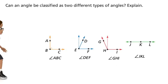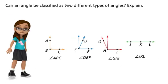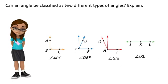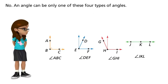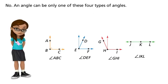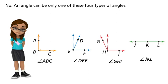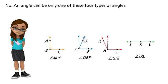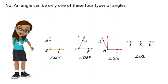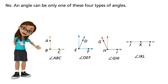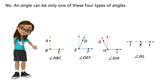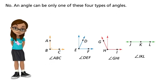Can an angle be classified as two different types of angles? Explain. No. An angle can be only one of these four types of angles. Now you know some common geometric terms.